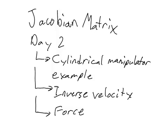Today is day two of the Jacobian matrix series. We're going to look at three things: first, an example of how you find the Jacobian matrix for the cylindrical manipulator; second, inverse velocity with the Jacobian matrix; and third, how you use the Jacobian matrix to find the forces on the end effector.